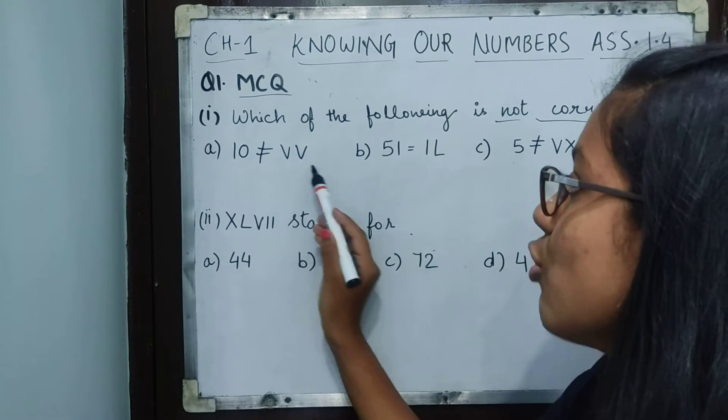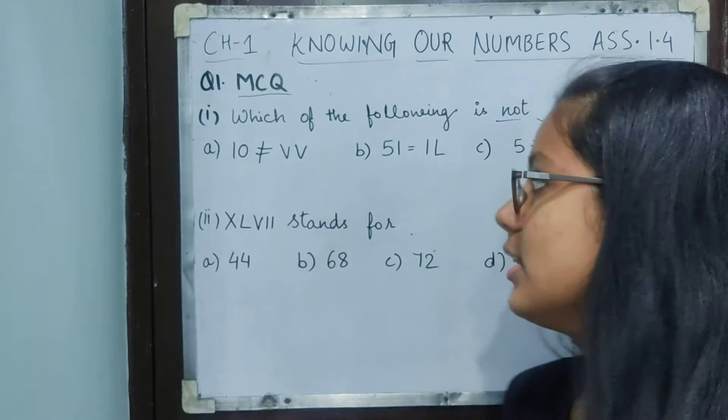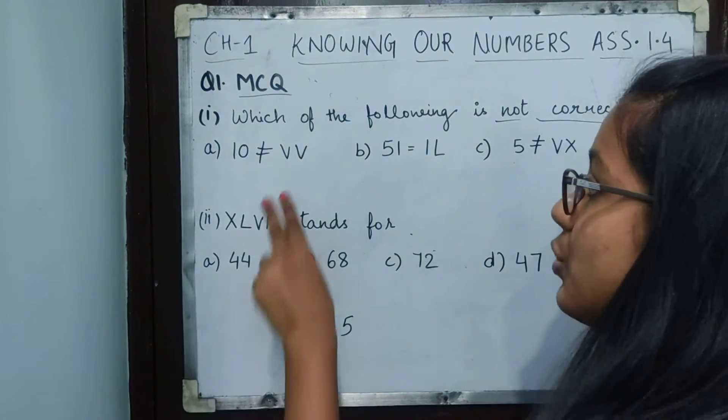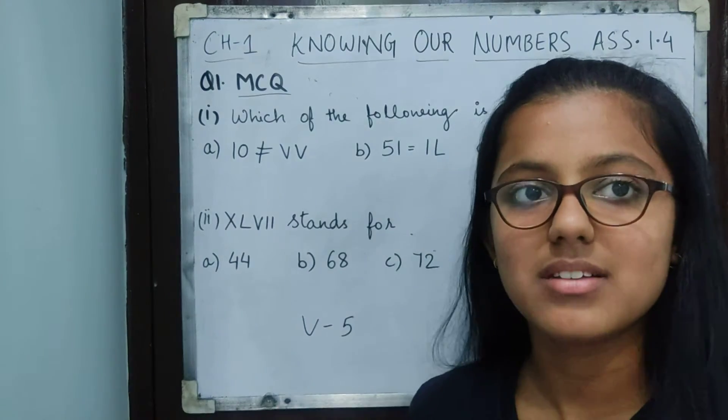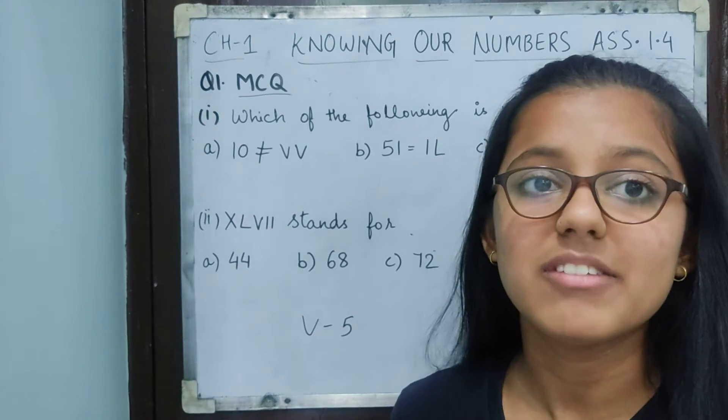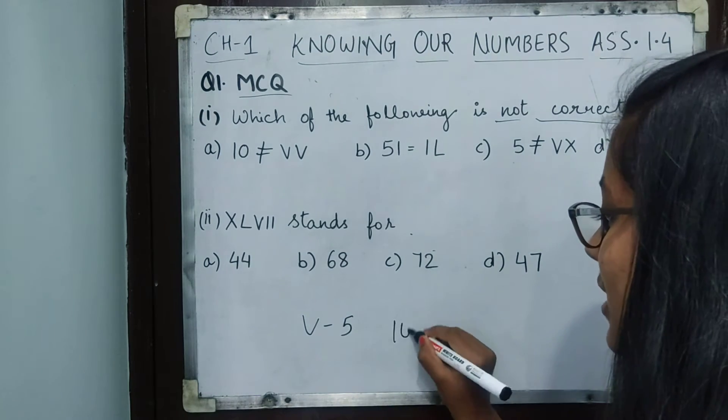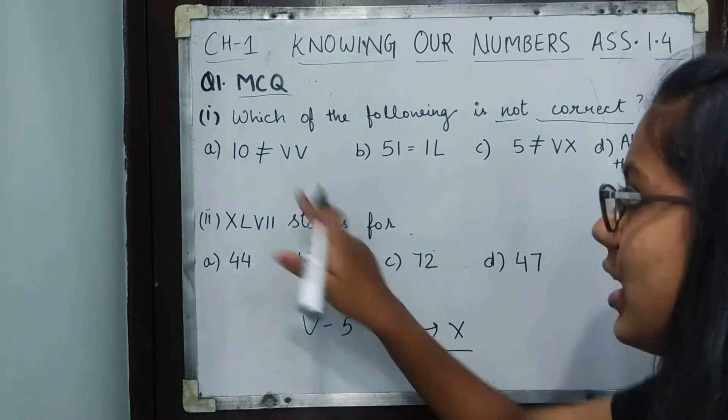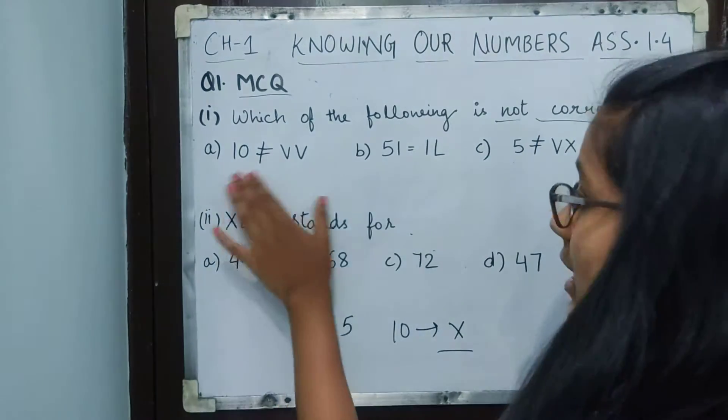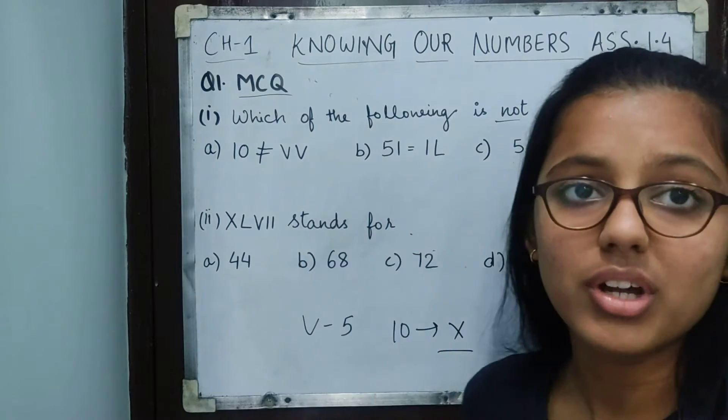First one: 10 ≠ VV. Now V means 5, so if two V are there, that means 10. VV would be V+V = 10, but we never write 10 as VV. Why? Because we have the symbol X for 10. So this is correctly written - they said 10 is not equal to VV because 10 equals X. This option is correct.